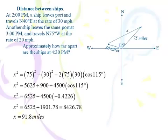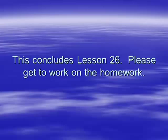Now that we have law of cosines under our belt, along with law of sines from the previous two lessons, there's not a triangle out there we can't solve. As long as they give us three pieces of data, and at least one of the pieces has to be a side, we can do any triangle that's out there. Well, this wraps up lesson 26. Get to work on the homework.